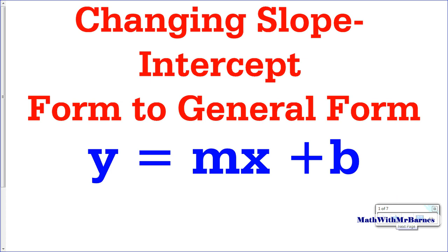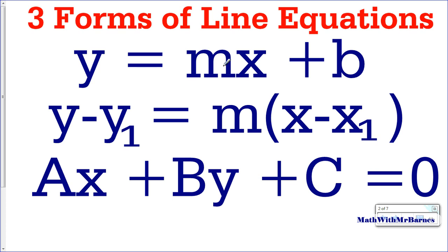Alright, so these are my three forms of a line. y equals mx plus b is right here. This is my slope point form, and this is my general form. One of the things we need to know about this is the restrictions on a, b, and c.